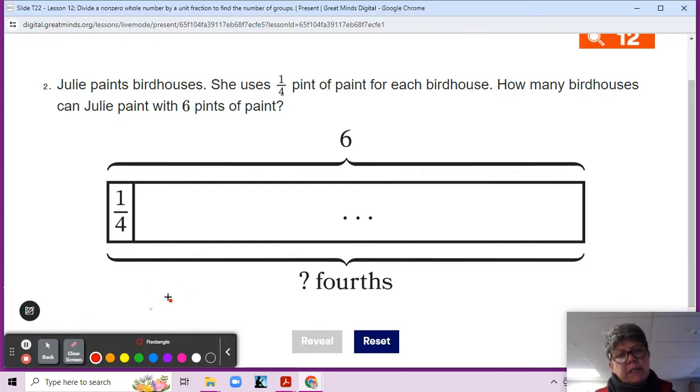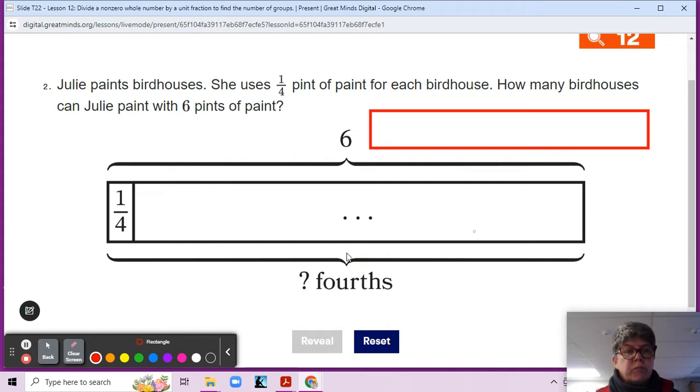All right. Very good. So now let's make a tape diagram that can help us solve the problem and make sure you're writing notes on your book number two. Okay. So I made a tape diagram and this tape diagram needs to represent six because we need to find out how many fourths are in six. What would be our division problem here? How many fourths are in six? So six divided by one fourth. How many one fourths are in six? And since one fourth is going to be each birdhouse, then that will tell us how many birdhouses we need.